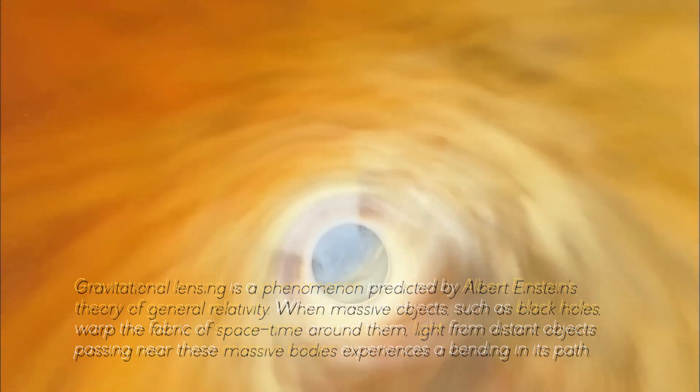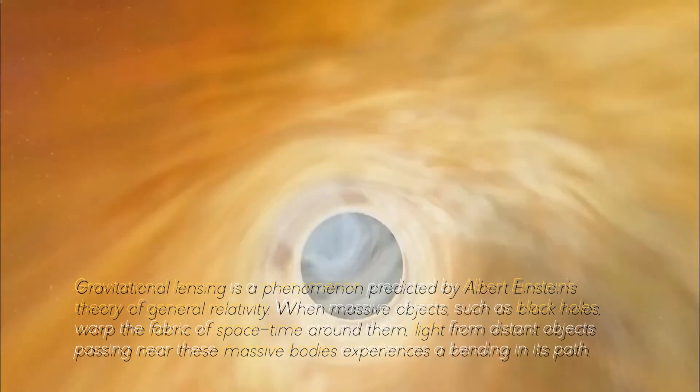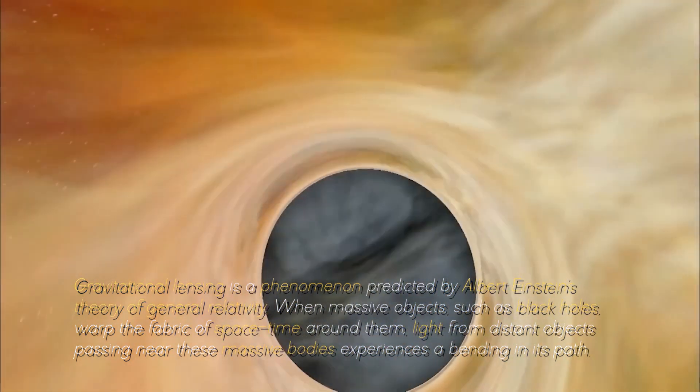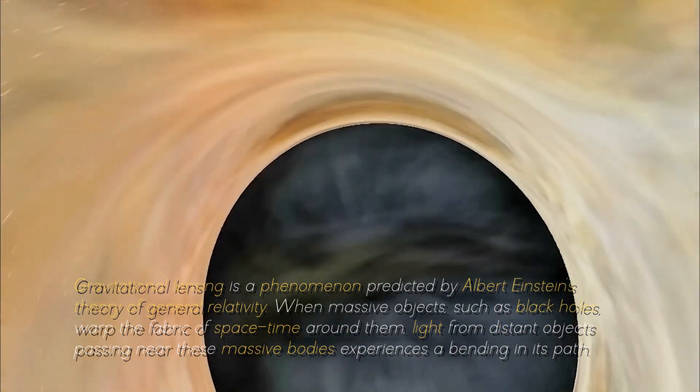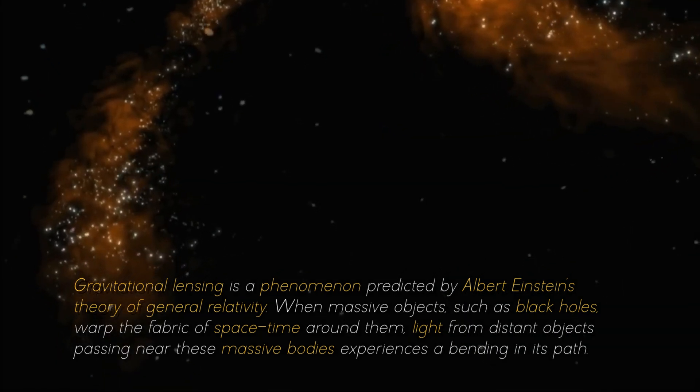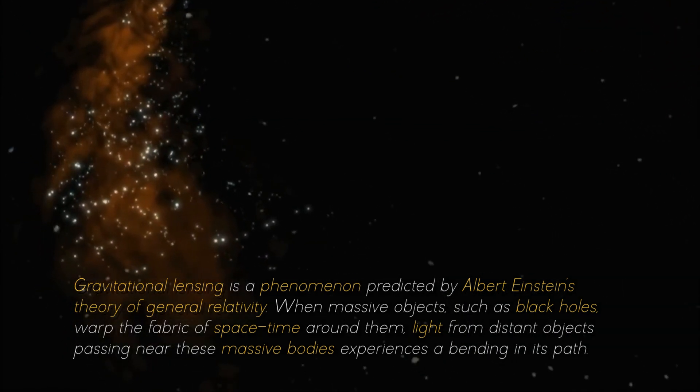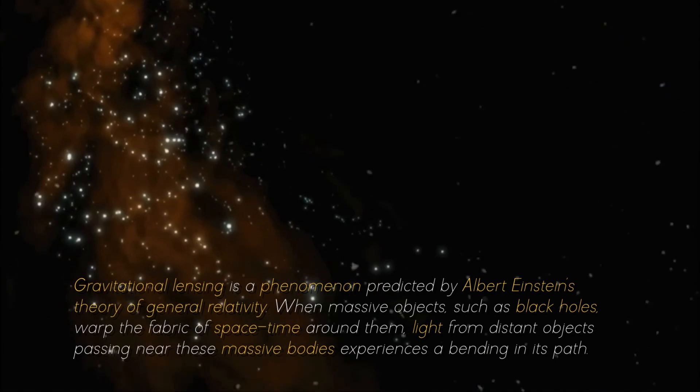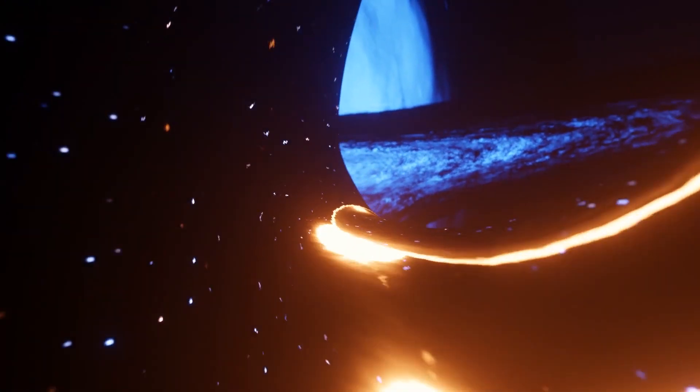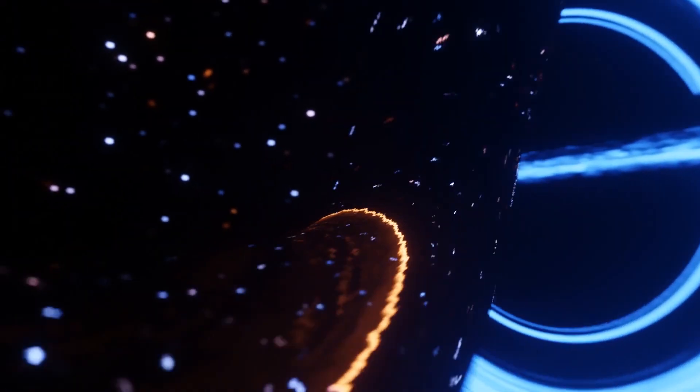Gravitational lensing is a phenomenon predicted by Albert Einstein's theory of general relativity. When massive objects, such as black holes, warp the fabric of space-time around them, light from distant objects passing near these massive bodies experiences a bending in its path. This results in a visual distortion or magnification of the object's image.